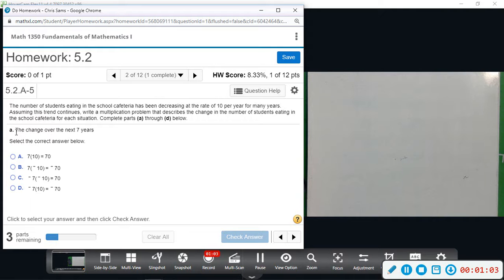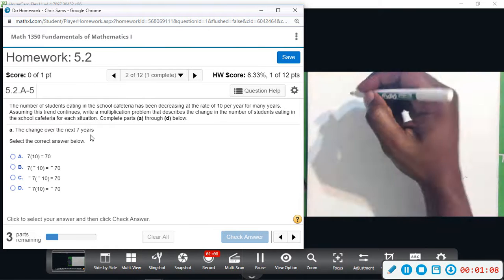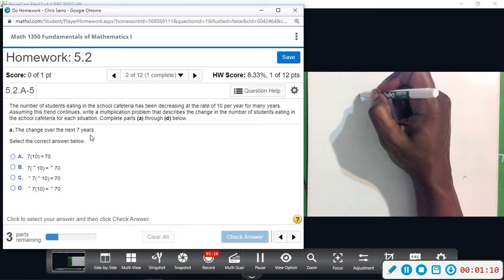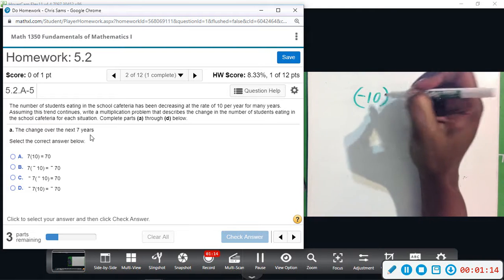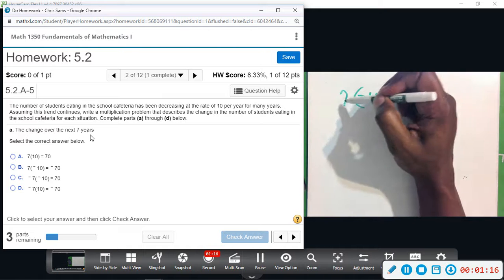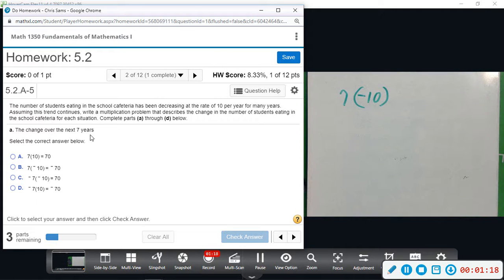Okay, so A, the change over the next seven years. So we're told that ten fewer students per year. So we want negative ten times seven years. We're decreasing by ten, so V would match.